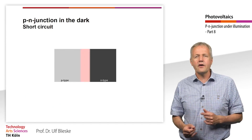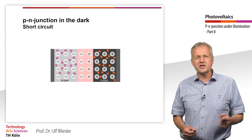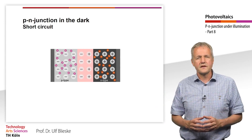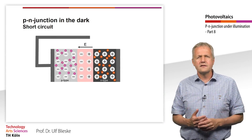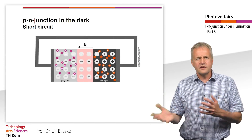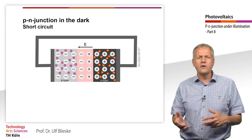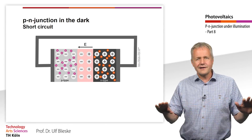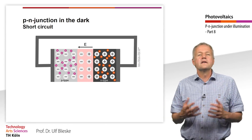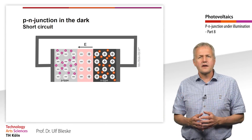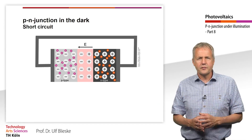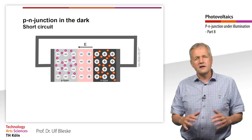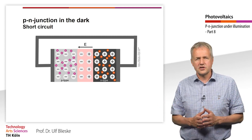First, however, we consider a p-n junction in the dark which we short-circuit. If we now look at the diffusion and the drift current densities of the holes and the electrons, we can see that all currents are exactly equal. The charge carrier currents are in equilibrium, so in the dark there is no net current flow in the short-circuit p-n junction.